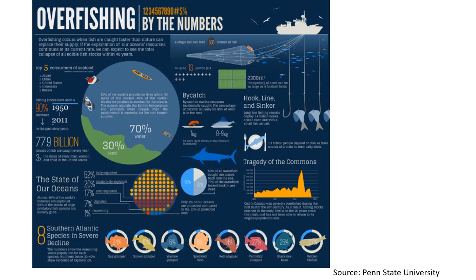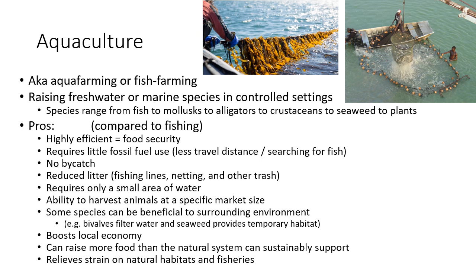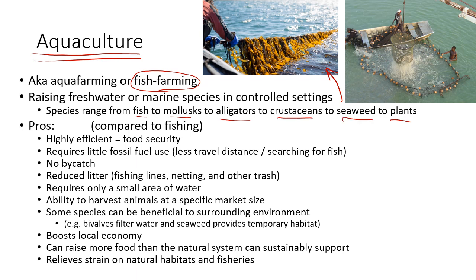Before getting to aquaculture, I want to point out a facts-and-figures slide — please pause and read it. Now, let's get into aquaculture, also known as aqua farming or fish farming. For this class, use the term aquaculture on tests and quizzes. Aquaculture is raising any type of species in an aquatic or marine setting — species can range from fish to mollusks like clams or oysters, to alligators, crustaceans like shrimp or lobster, crabs, and even seaweeds or plants.